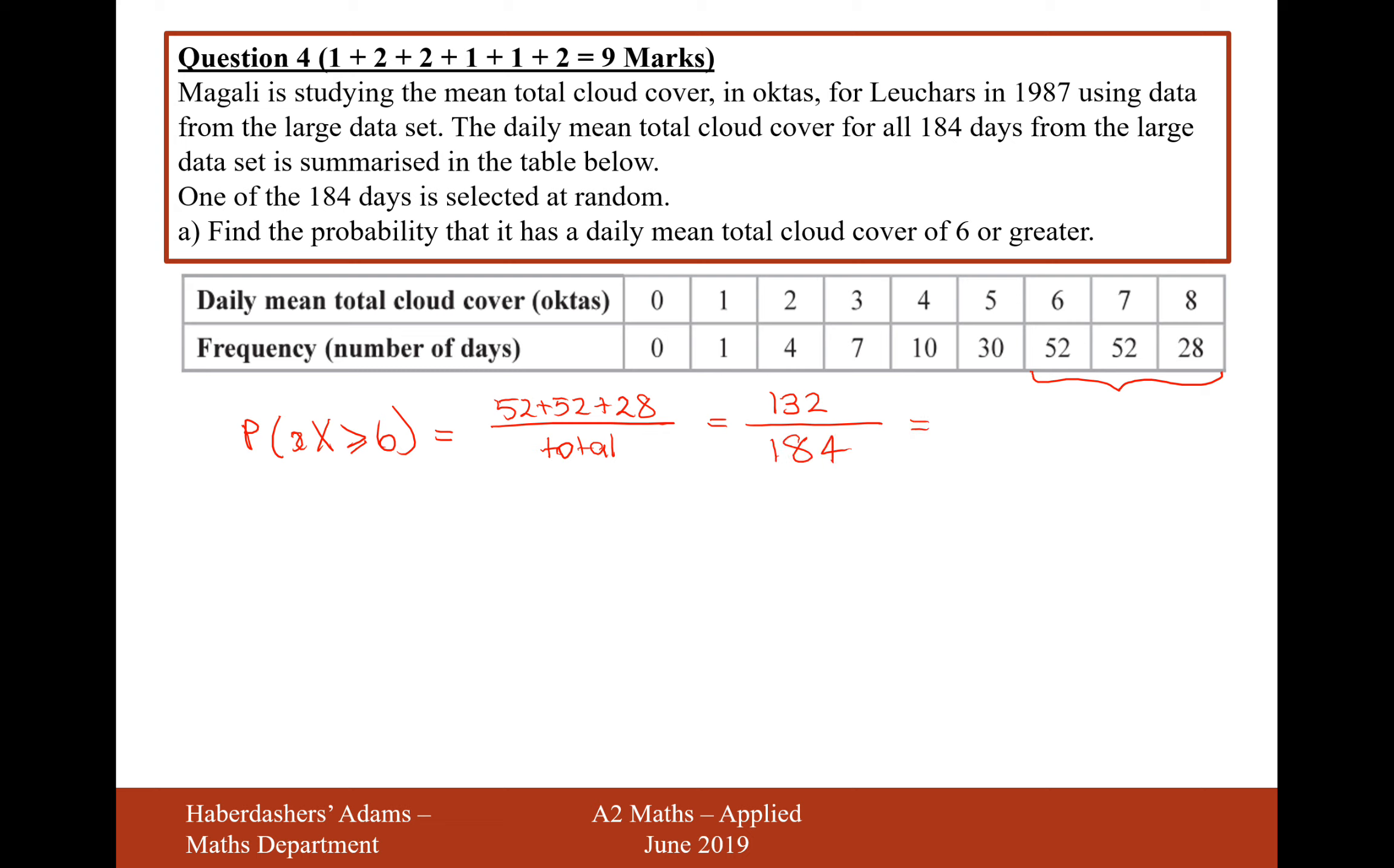Of course, 184 days in the data set. 132 divided by 184 gives us 33 over 46 as a simplified fraction. But what's the decimal answer here? 0.717 to three significant figures. So there we are. That's our answer for part A. A nice little cheeky probability question.